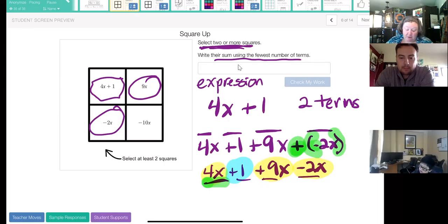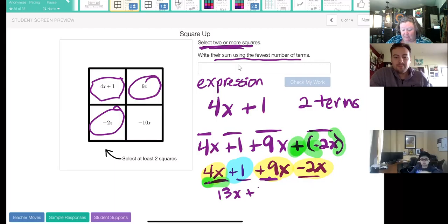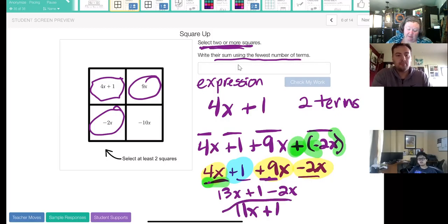So now I'm going to combine my like terms. I have 4x, 9x and negative 2x, and I'm just going to add the coefficients. So 4 plus 9 is 13. So now I have 13x plus 1 minus 2x. And 13x minus 2x would give me 11x plus 1. This is the fewest terms possible. I can't combine 11x and 1 because the 1 doesn't have an x that goes with it.